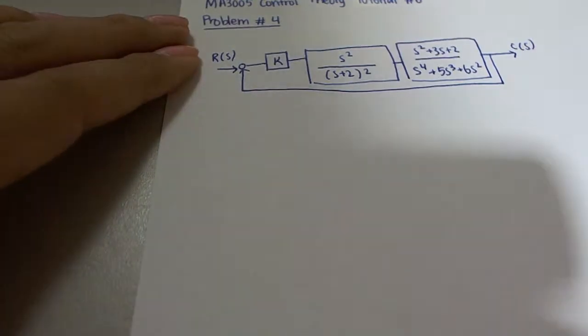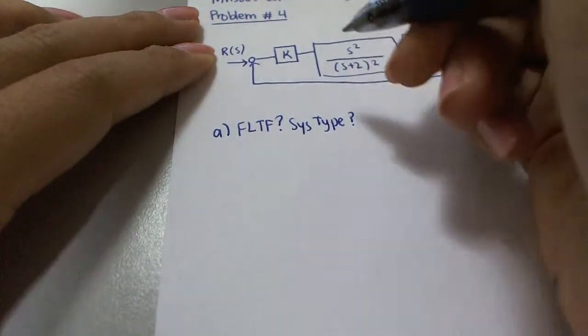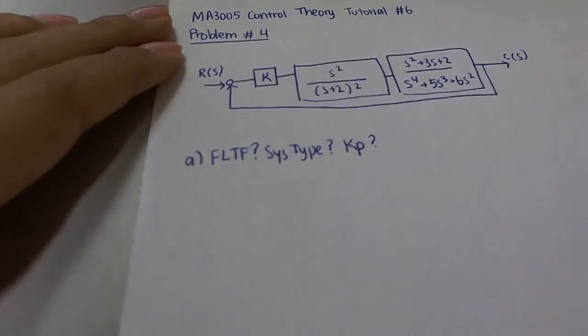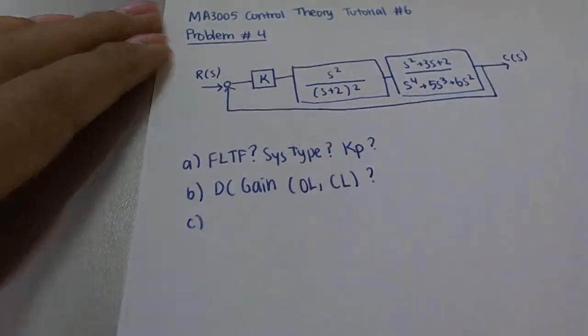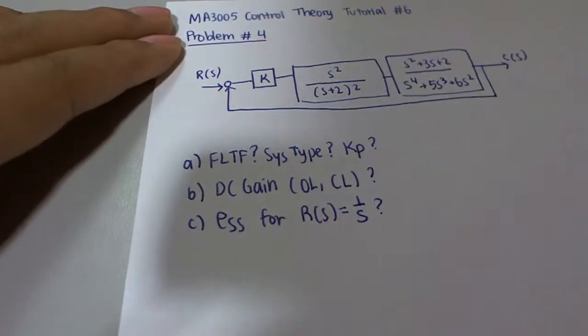The system is nested with a unity feedback, with the output and input defined accordingly. The first part of the question asks for the forward loop transfer function, the system type, and the static position error constant. The second part asks for the DC gain of the open loop and closed loop system, and lastly the steady state error for a unit step input. Now let us solve for the first part.